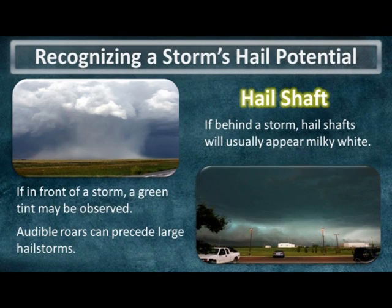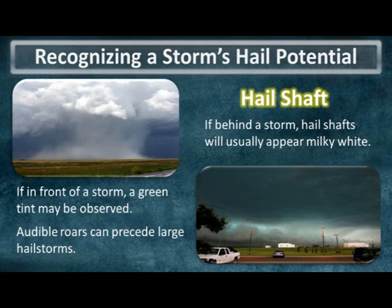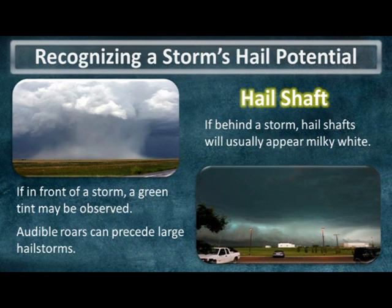So what are some clues to look for that would tell you if a storm is producing hail? One feature is called a hail shaft. If you're behind a thunderstorm, most times hail shafts will take on a milky white appearance. But if you're in front of a storm — say the storm is approaching your location — the hail shafts usually aren't quite as vivid. In that case, the only clue will oftentimes be a green or aquamarine color in the sky. And in the case of very large hailstorms, sometimes observers have reported hearing loud audible roars up to a mile or so in advance of the storm.